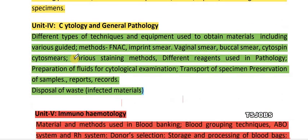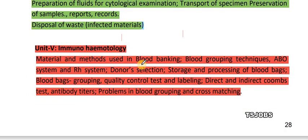Unit 4 covers cytology and general pathology — materials obtained including various guided methods, vaginal smear, cytospin, cytosmeares, and various staining methods. Unit 5 is immunohematology. This completes the three different topic areas in their subunits.